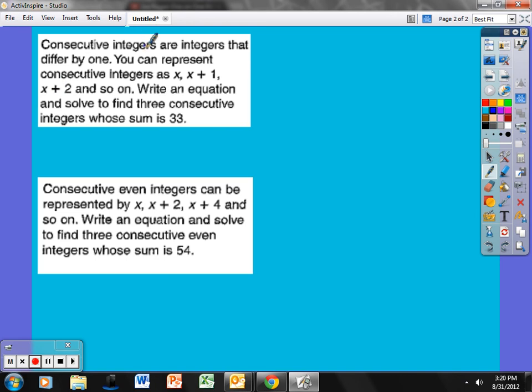Consecutive integers. Consecutive one after the other after the other. So one, the next integer is two. The next one is three, then four. They're consecutive. They come in order. Consecutive integers are integers that differ by one. You can represent consecutive integers as X, X plus one, X plus two, and so on. So I could take five. The next integer is five plus one, so that's six. The next integer after that would be taking the original, which is five, and adding two, I get seven, and so on. So the next one would be X plus three, or five plus three, et cetera.